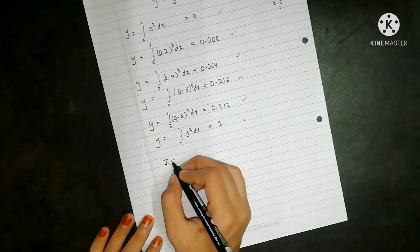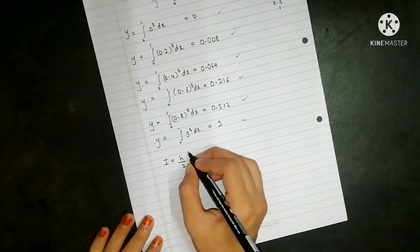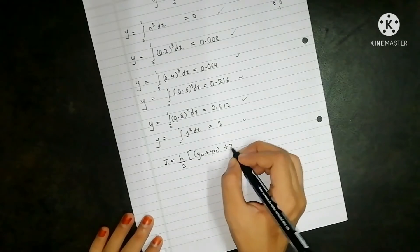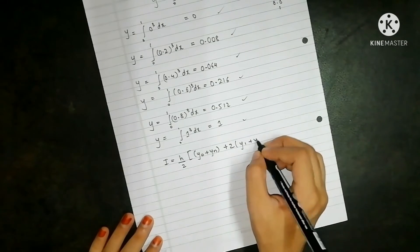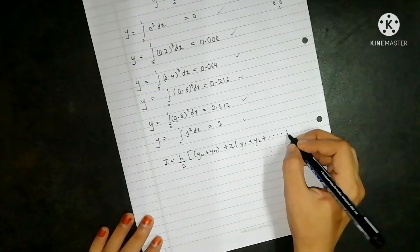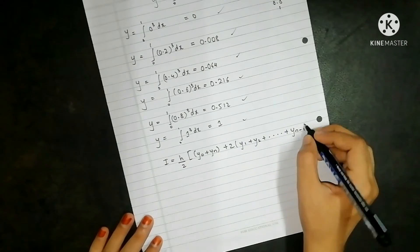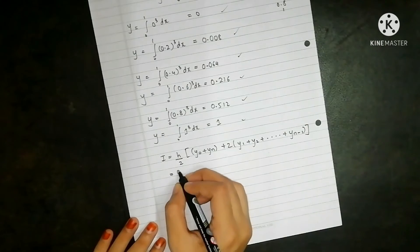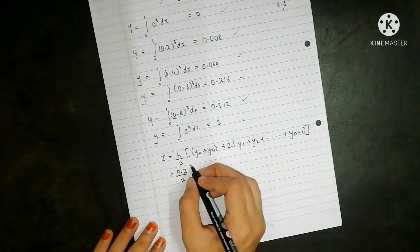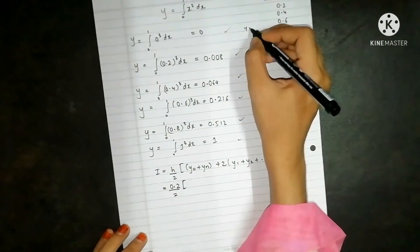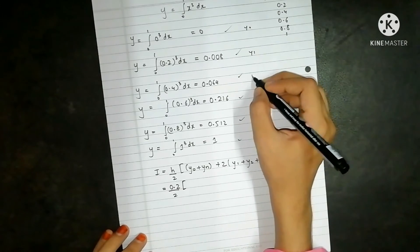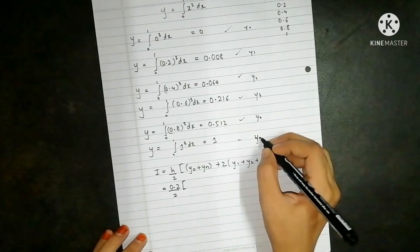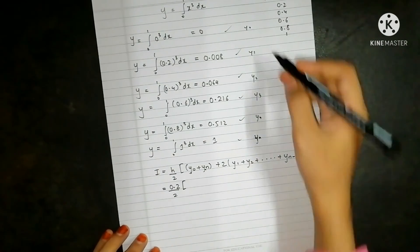So our formula was i is equal to h by 2, extreme coordinates plus 2 times the remaining coordinates. The difference h was 0.2 upon 2, y0, y1, y2, y3, y4 and yn. So y0 plus yn, these two readings.